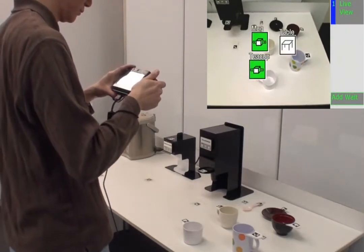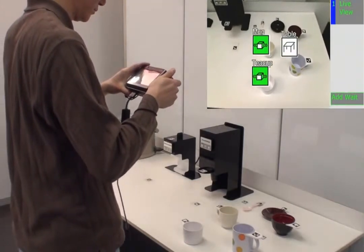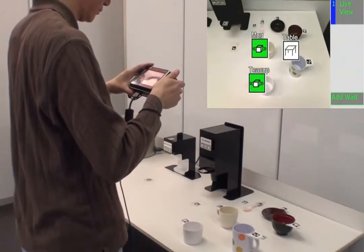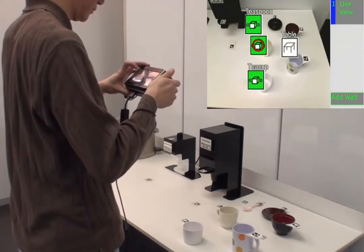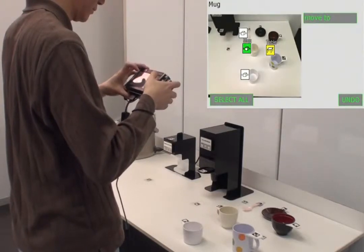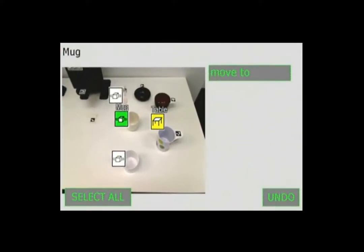First, I will create an annotated photograph that tells a robot where to move an item. After touching the green icon of the mug, the robot's possible actions are shown. All movable items, like the mug, have the Move To instruction.